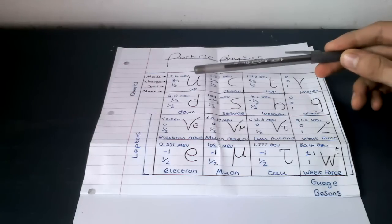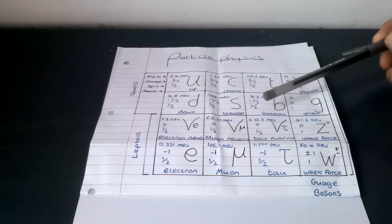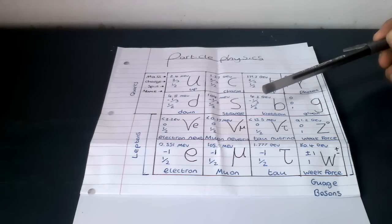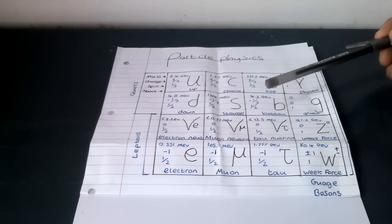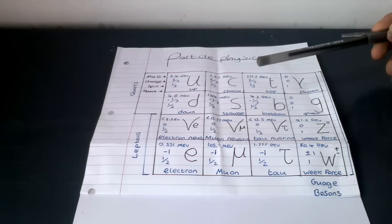Quarks come in six flavours: the up, the charm, the top, the down, the strange and the bottom. Quarks are tiny particles which make up, for instance, protons and neutrons. More strictly, they make up hadrons. Hadrons which are composed of three quarks are called baryons, and hadrons which are composed of two quarks are called mesons. Mesons are composed of a quark and an anti-quark pair.